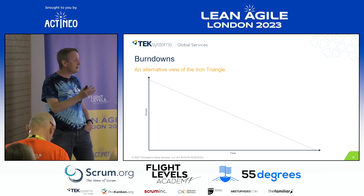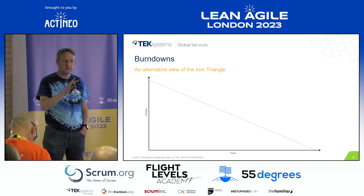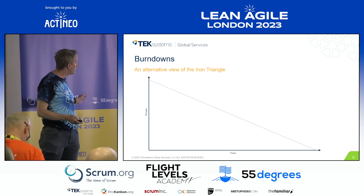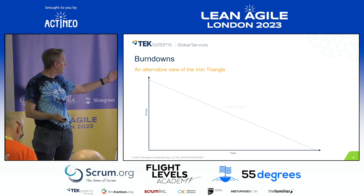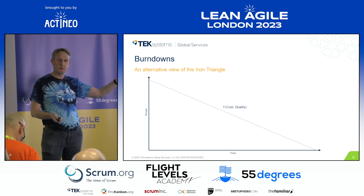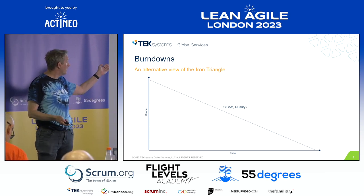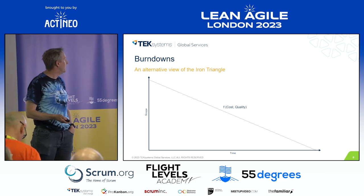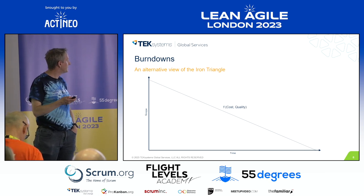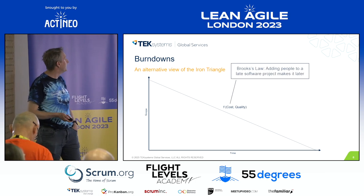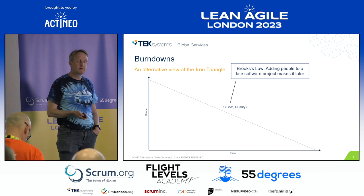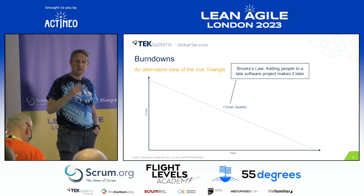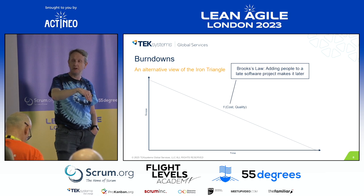Another way of looking at the iron triangle is basically a burn down. I was at a conference in Zurich and Ken Schwaber used a variation of this slide. A burn down has scope on one axis and time on the other, and the slope of that line is a function of cost and quality. I was chatting about this with Joseph Pellerin and Keith Braithwaite. We all know Brooks' Law: adding people to a late software project makes it later. So cost — you can't really play around with cost unless you're doing it early. If you're trying to make that burn down steeper by throwing money at it, it's probably not going to work.